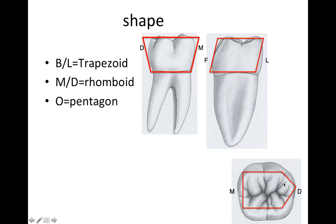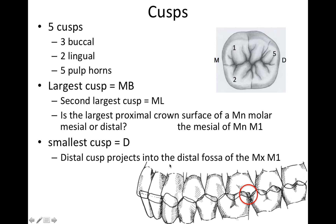The point of the pentagon is made by the distal cusp. Now looking at the cusps: this tooth has five cusps — three on the buccal and two on the lingual — and there are five pulp horns.